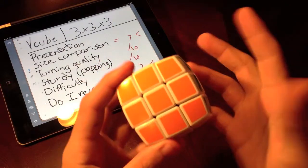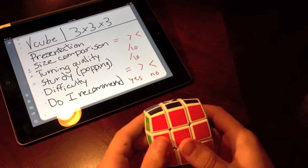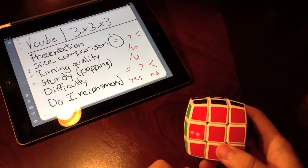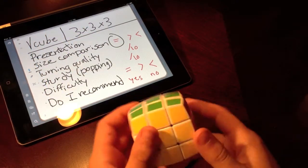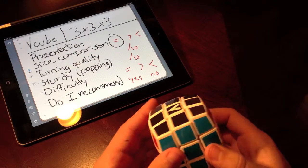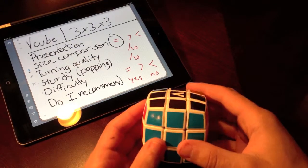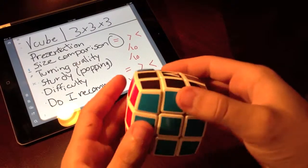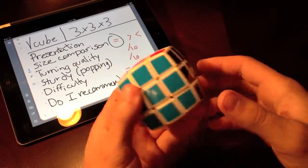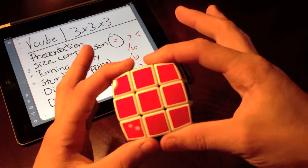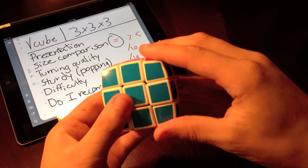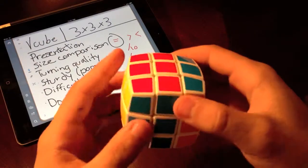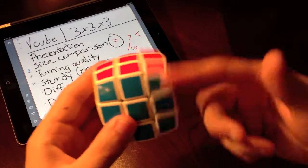Basically you don't feel the difference beside the fact that it's a bit roundish like a ball. So size comparison, I would say it's about equal to a 3x3x3 from Rubik's. Let's go with the turning quality. Already it's been moving in my hands just by holding it. Let's try it. Yes, it does in fact move pretty well. It's not even lubed yet.